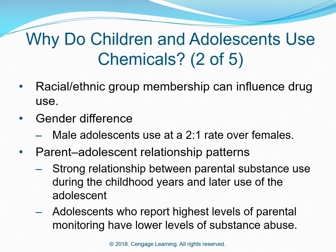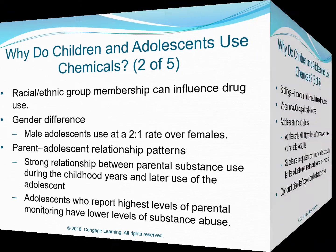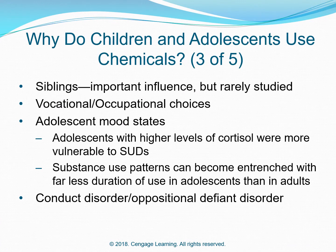Racial and ethnic group membership can influence drug use. Regarding gender differences, male adolescents use at a 2-to-1 ratio over females. Parent-adolescent relationship patterns matter: there is a strong relationship between parental substance use during the childhood years and later use by adolescents. Adolescents who report the highest levels of parental monitoring have lower levels of substance abuse. Siblings are important influences but are rarely studied.